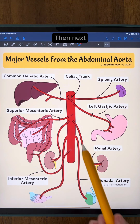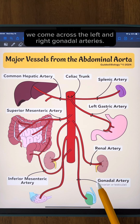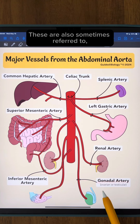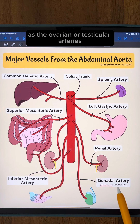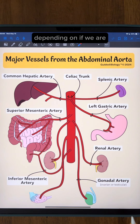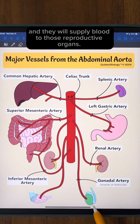Next, we come across the left and right gonadal arteries. These are also sometimes referred to more specifically as the ovarian or testicular arteries, depending on whether we are looking at a female or a male, and they supply blood to those reproductive organs.